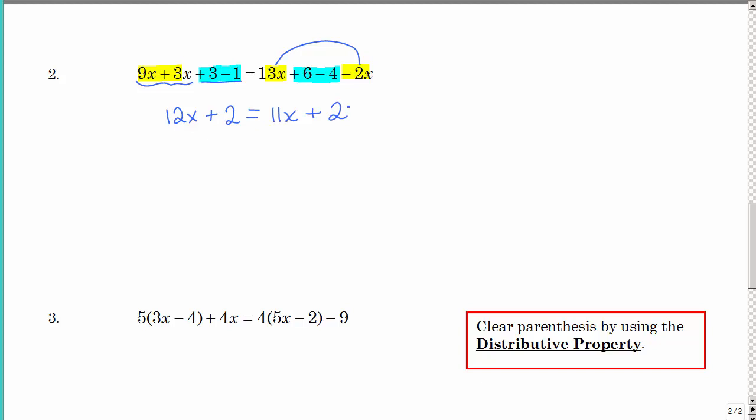Now that second step says I want to put my variables on one side and numbers on the other. That first example, I only had x's on the left. Now I have x's on the left and the right. Well, since I have 12x on the left, I think I want to get them all on the left side. So since I have a positive 11x here, I could subtract 11x because 11x minus 11x is 0. So what's 12x minus 11x? That's right. That's 1x. You could write the 1 if you want to, but we really just usually don't. Okay. That's 0. That's what we want. Equals positive 2.